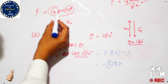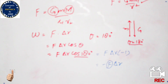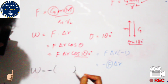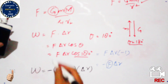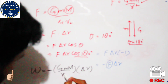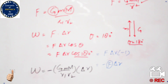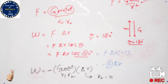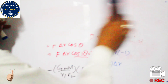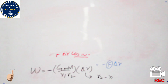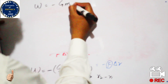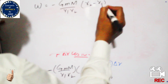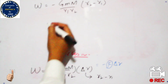Substituting the value of F = GMm / (r1 · r2) and delta r = r2 − r1, the work done for one small interval is: W = −GMm / (r1 · r2) × (r2 − r1).